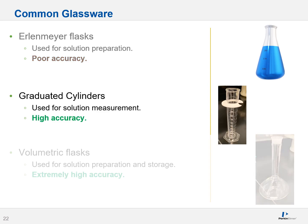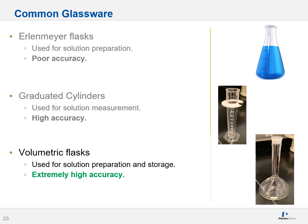Graduated cylinders are designed specifically for solution measurement and tend to be extremely accurate. They come in many different sizes — I've seen them as small as 10 milliliters to as large as one liter. Then you have volumetric flasks, which like graduated cylinders are very accurate. They're used for solution preparation and storage, whereas graduated cylinders are used mostly for measuring and solution preparation. Volumetric flasks can range from about five milliliters to six liters.